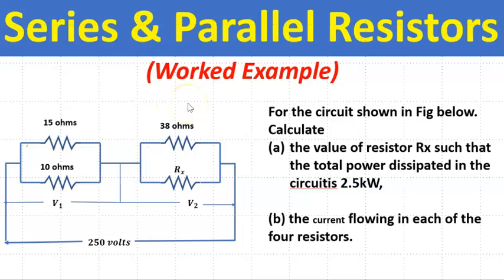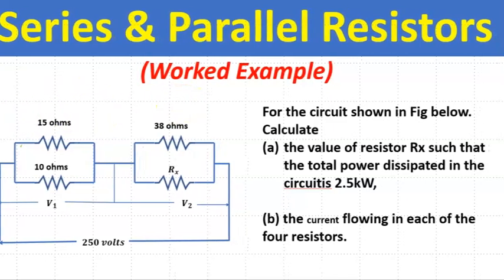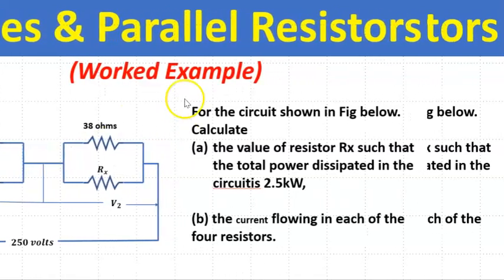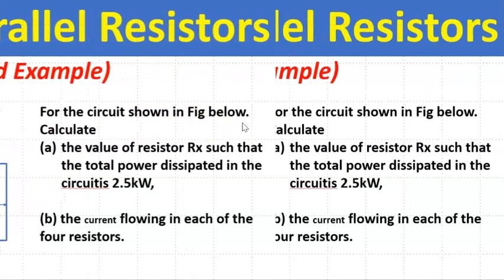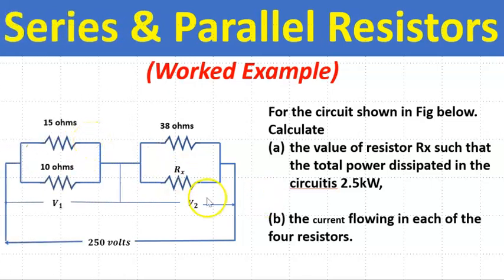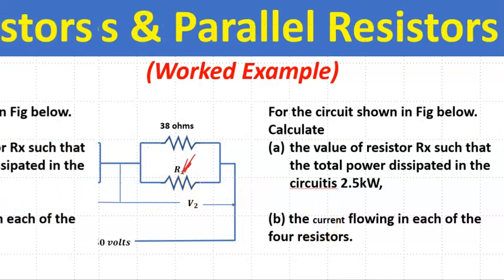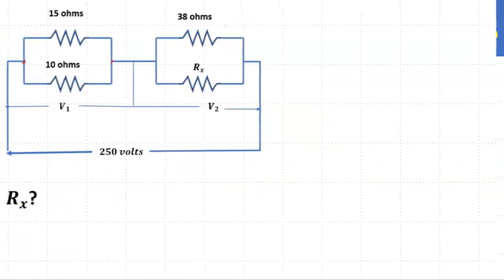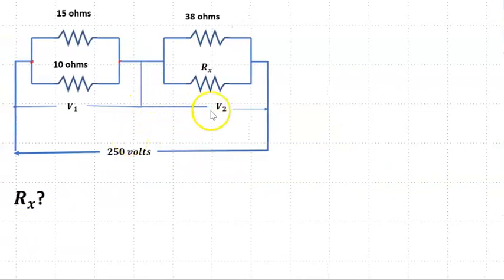Thank you for staying with us and let's get to class. Our example says that for the circuit shown in the figure, we should calculate the value of Rx, and part B says we should find the current flowing in each of the four resistors. Let's get started and draw the circuit.